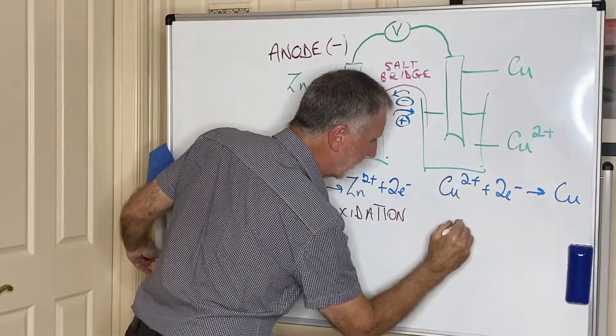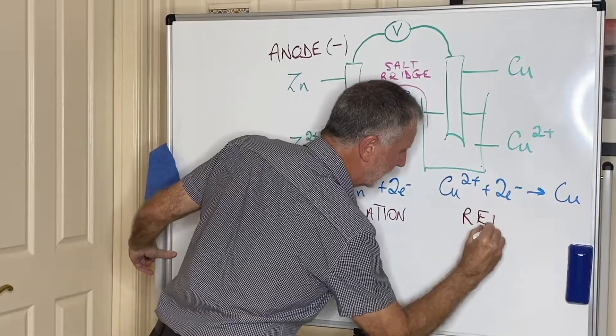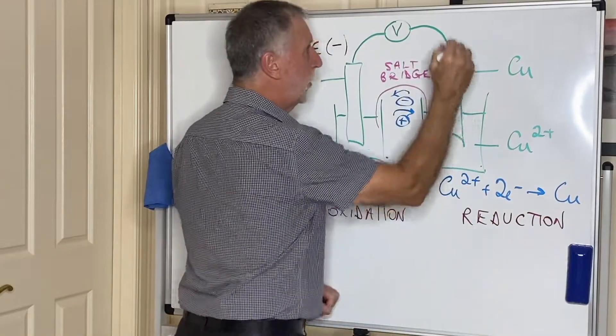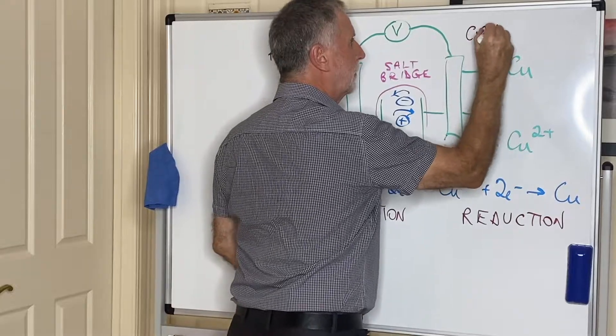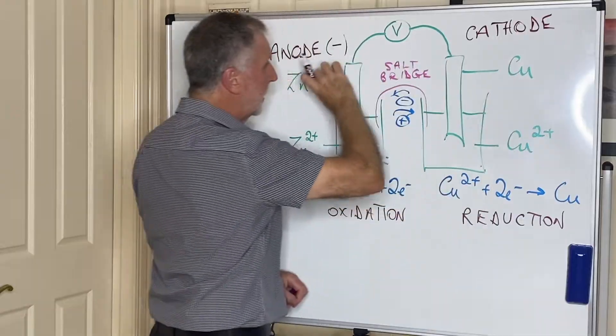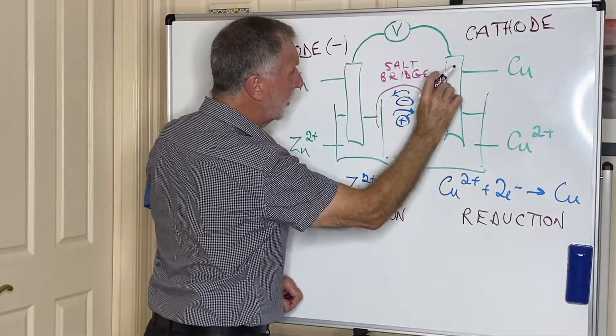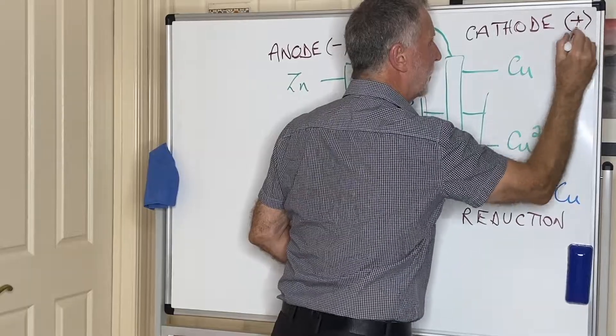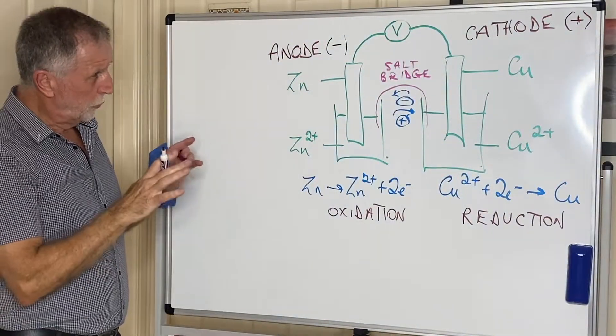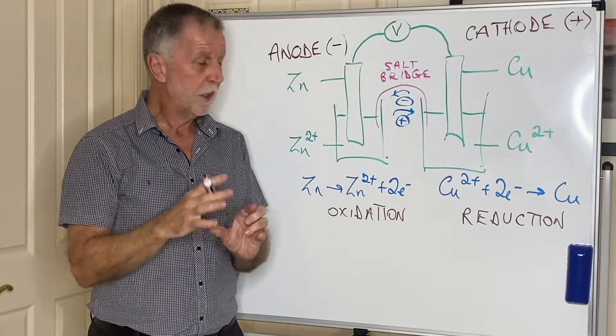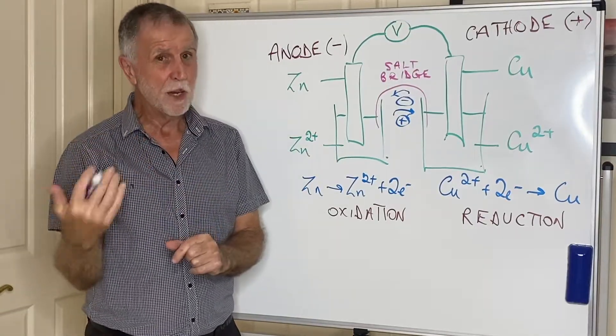The electrode where reduction takes place is called the cathode. And since electrons are moving in that direction, the cathode is positively charged. That pretty much shows you how a galvanic cell works. Again, as I say, we know them better as batteries.